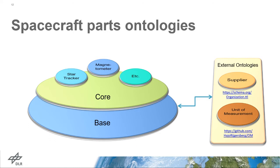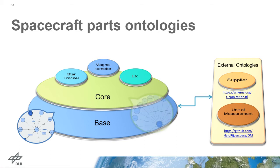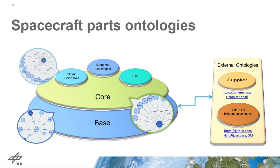The developed spacecraft parts ontology has a hierarchical structure. At the bottom level, a base ontology defines basic classes such as part type and property type. In the middle, a core ontology defines commonly used properties of spacecraft parts. On the top level, there are multiple ontologies separated by categories, where each category has definitions of properties unique to that category.